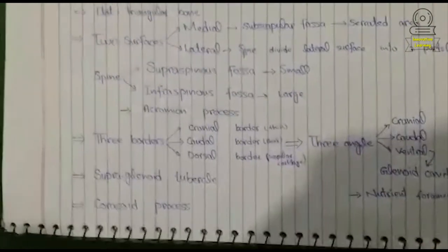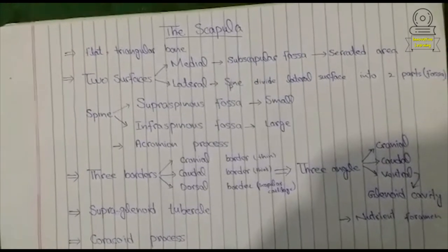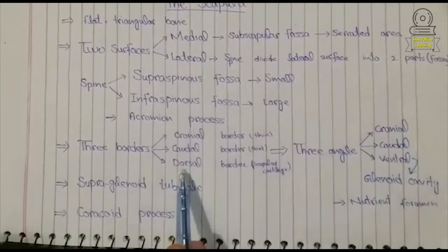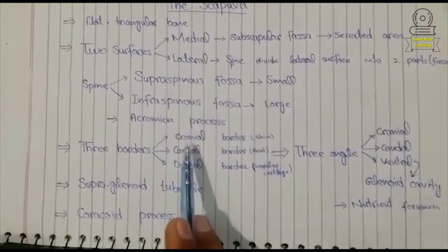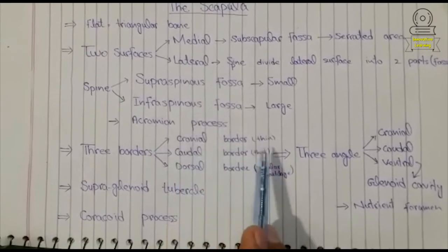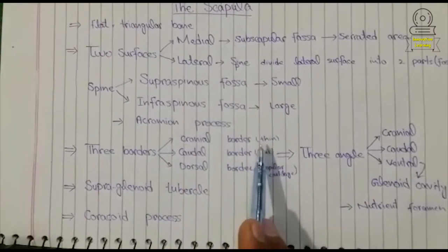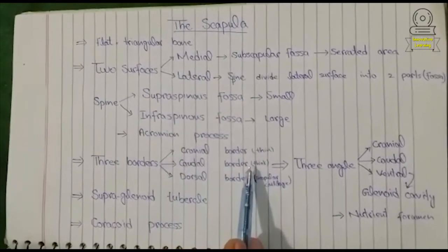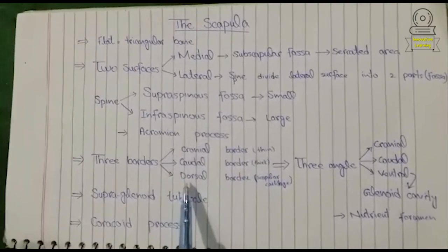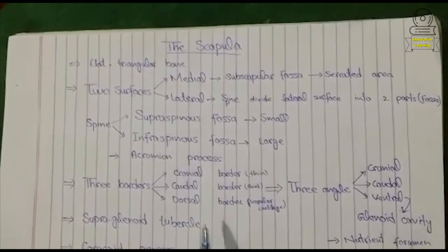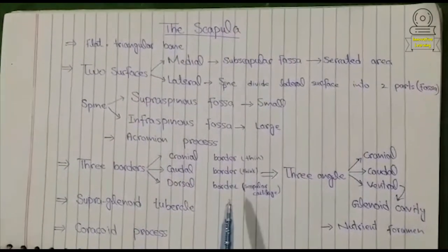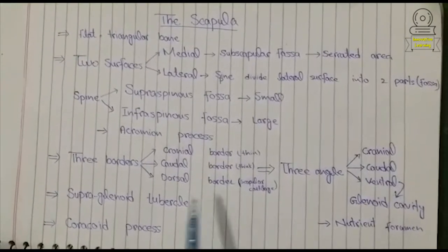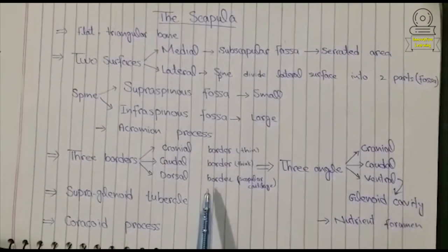The scapula has three borders. The first is the cranial border, the second is the caudal border, and the third is the dorsal border. The cranial border is thin and sharp, while the caudal border is thick and wide. The dorsal border has pores and is a site for the attachment of the band of scapular cartilage.